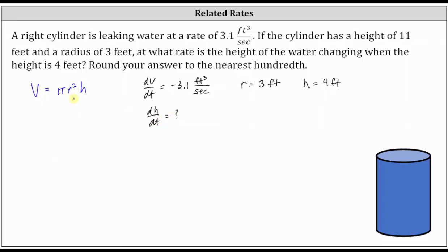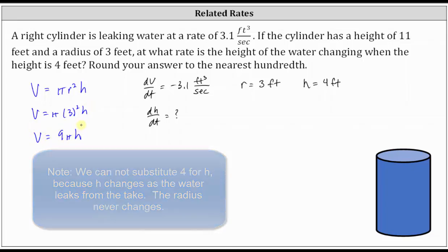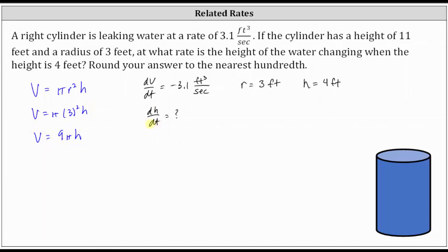Because the water in the cylinder always has a radius of three feet, we can substitute three for r in the volume formula. This gives us V equals pi times three squared times h. Simplifying, we have V equals nine pi h. Because we're looking for dH/dt, we now differentiate both sides of the equation with respect to t.